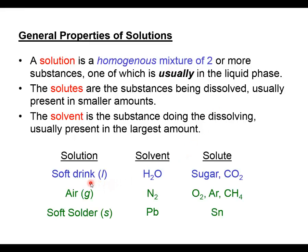Let's look at a soft drink — that's a solution in the liquid state. The major component dissolving everything else is the solvent, which is the water content in the soda pop. The solutes would be the sugar or artificial sweetener, carbon dioxide as carbonation, which forms some carbonic acid, phosphoric acid in some colas, and flavorings and colorings. This is an abbreviated list, but it's an example of a very common liquid-based solution you deal with in everyday life.